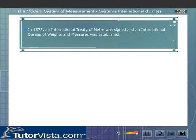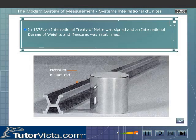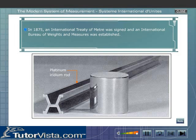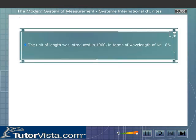The International Bureau prepared platinum-iridium rods of special cross-section which had two fine parallel lines engraved on them. The space between these two parallel lines was accepted as one meter.